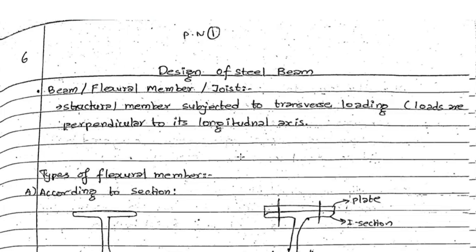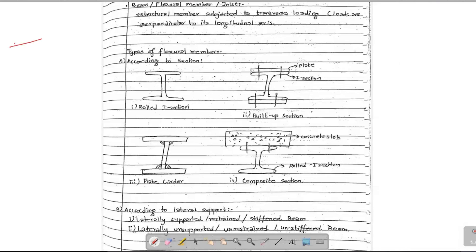What does the beam mean? It is called a transverse loading act. What does the beam mean? It is called a longitudinal axis. It is called an I-section. Generally, the beam is used in the I-section, or the channel section is used.